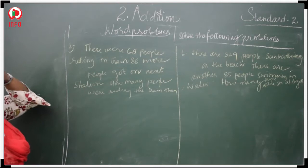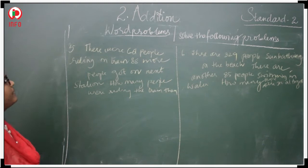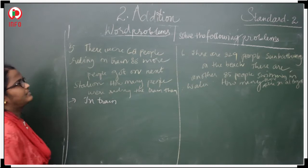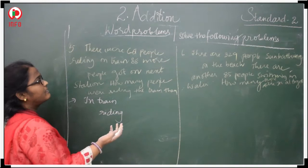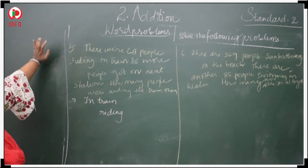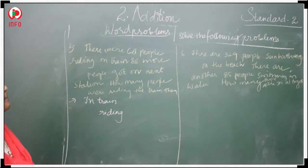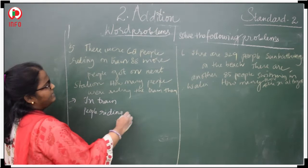There were 661 people riding on train. In train, 661 people riding on train. 88 more people got on next station.